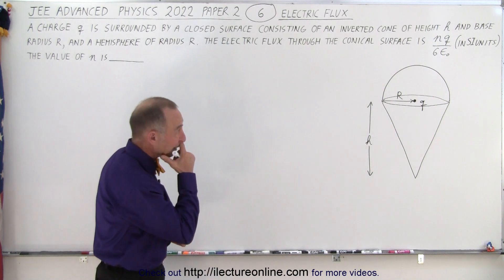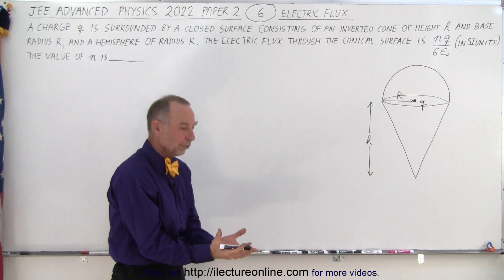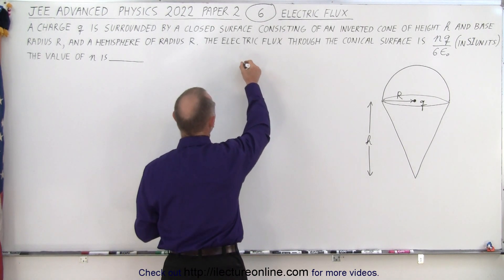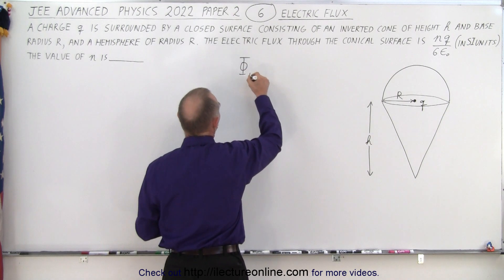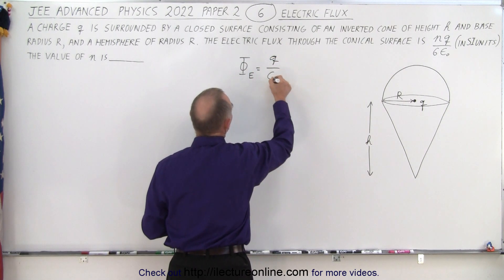Well, we should know that the electric flux through a closed surface with a charge inside is always equal to this. So the electric flux is always going to be equal to the charge inside divided by ε₀.